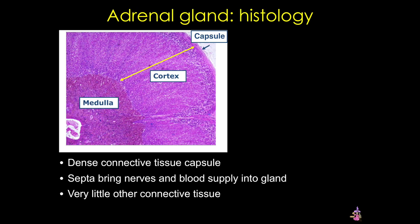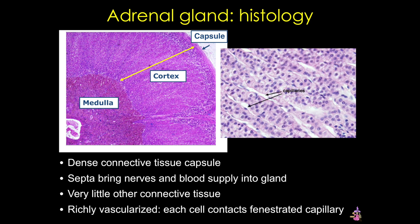The adrenal gland has a dense connective tissue capsule. It has septa that bring blood supply into the gland. The cortex has short arteries that form a network of capillaries that then drain into the extensive capillary network of the medulla. We're going to start by reviewing the inner region, the adrenal medulla.